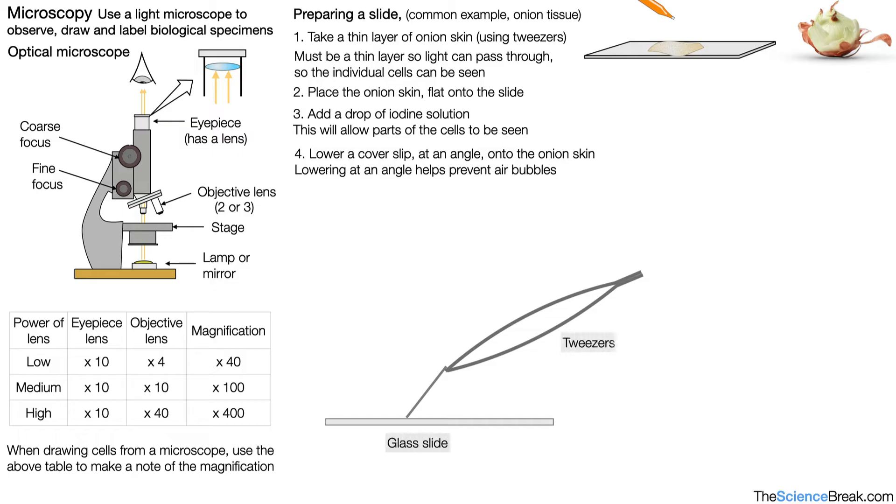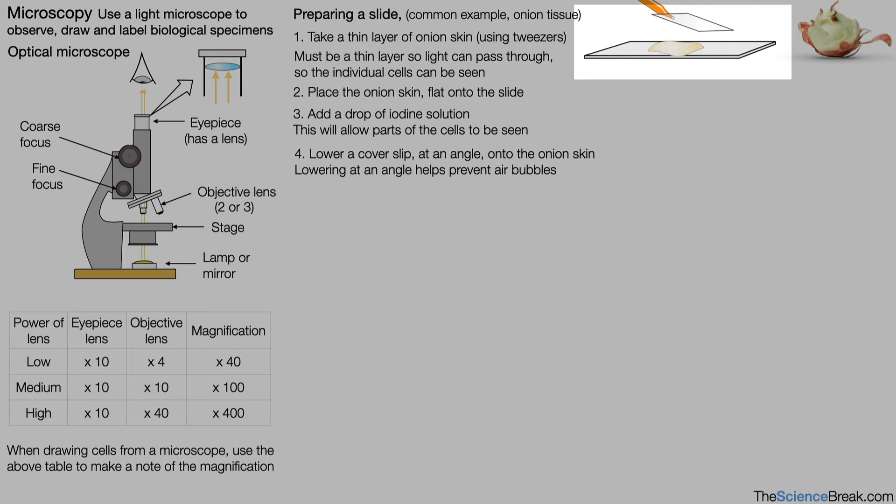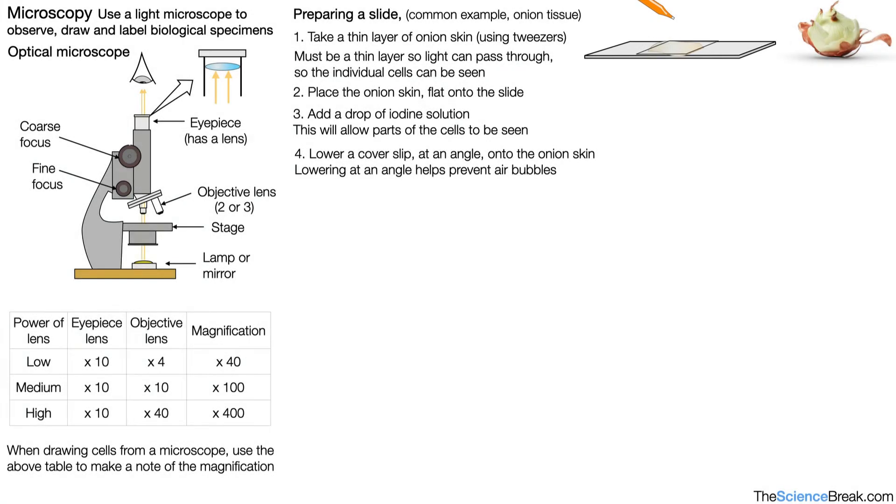So if we do a 2D version and side view of that, here we have our glass slide, we have some tweezers and we have a cover slip. All we would do is gently lower the cover slip at an angle onto our tissue, onto our onion skin. This will help prevent air bubbles. So there we go, there's our cover slip on our 3D version in the diagram, gently lowered at an angle.